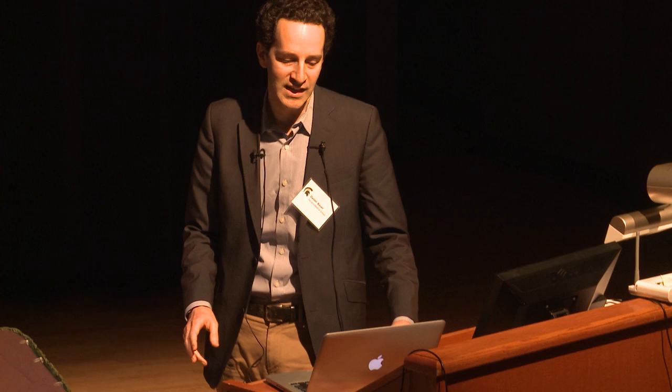Regarding off-target effects, they tend to be sequence-specific. A simple approach for the biologist is to use multiple guide sequences to make multiple on-target disruptions, then ensure those mutants have the same phenotype. In the case of a deletion, you might use guides A and B to delete one sequence, and then a non-overlapping A2 and B2 pair, using the same primer strategies to detect both deletions.